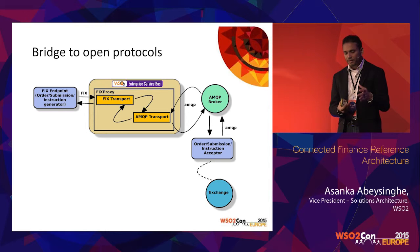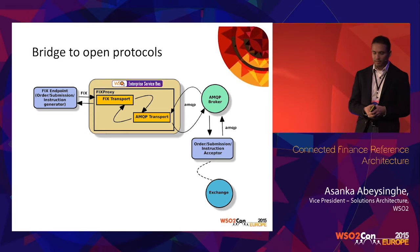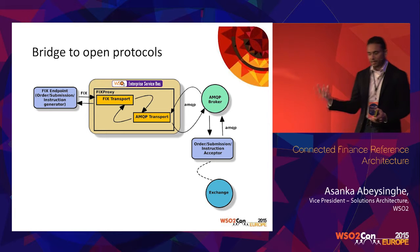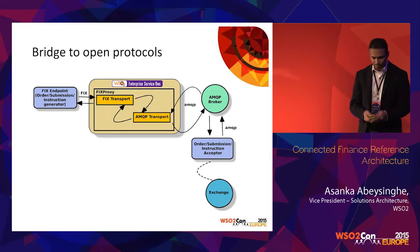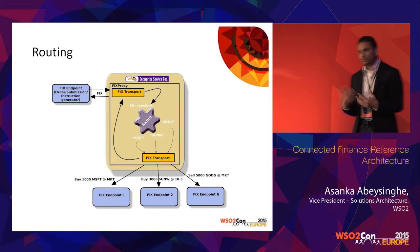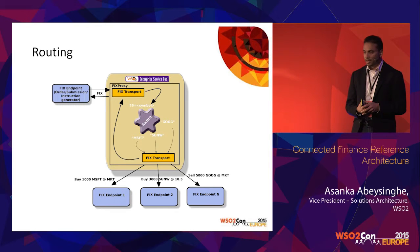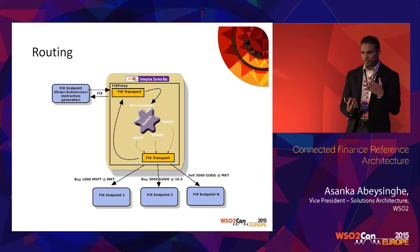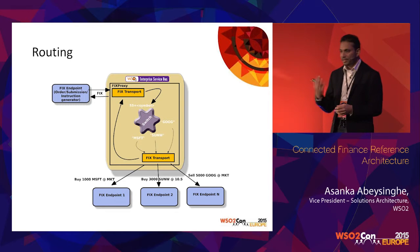Another example: converting FIX to AMQP, which has become a popular protocol in the financial sector. You convert the FIX message into AMQP, call the AMQP broker, and subsystems subscribe to the broker to retrieve messages. For routing, you can route messages to different trading flows based on a symbol or header value. Both header-based and payload-based routing are supported, directing messages to different service platforms and trading flows.